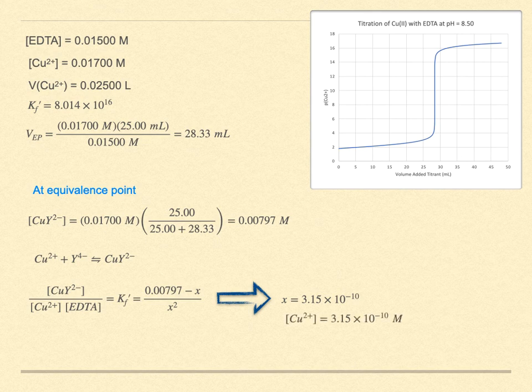Therefore, at the equivalence point, the copper ion concentration, and, by the way, the concentration of all forms of free EDTA, is 3.15 times 10 to the minus 10 molar. Its negative log is 9.501.